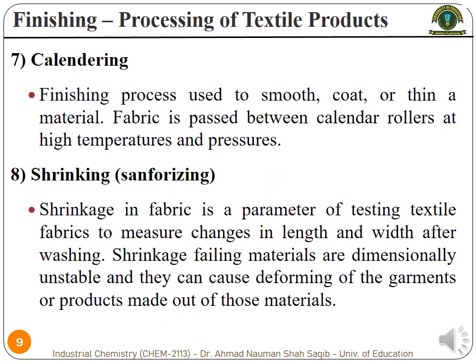Next we will discuss about calendaring and shrinking. Calendaring is a finishing process used to make a smooth surface, to coat something, or to make a material thinner. To do these things, a fabric is passed between calendar rolls which use very high temperature and pressure. By controlling the temperature and pressure, we can get our desired thickness or thinness of a material and the kind of smooth surface we want. That can be controlled by manipulating the temperature and pressure used in those rollers.